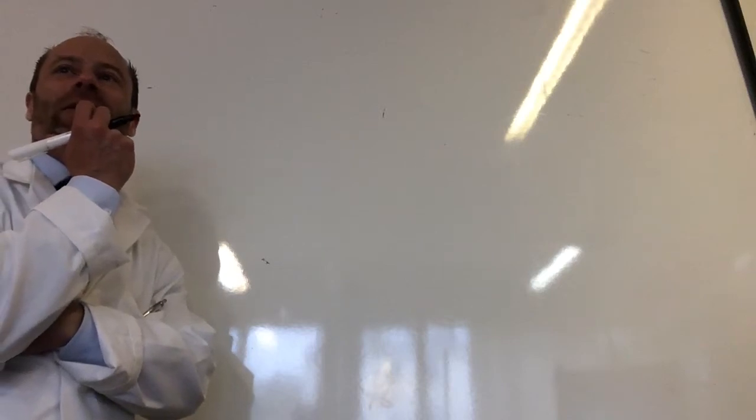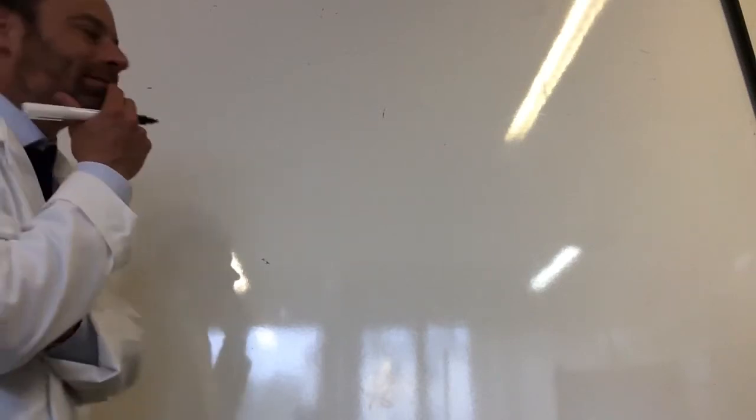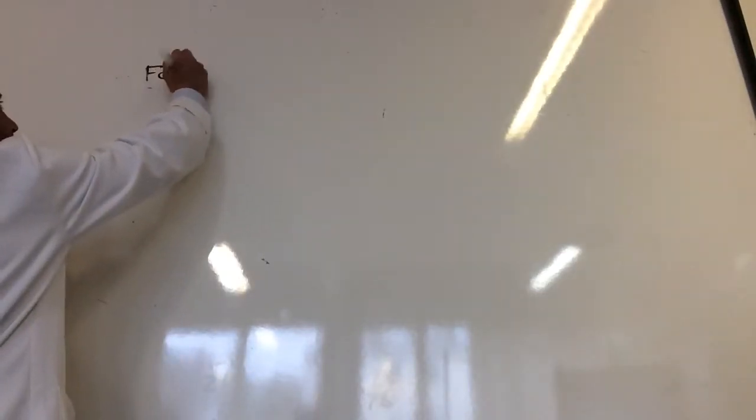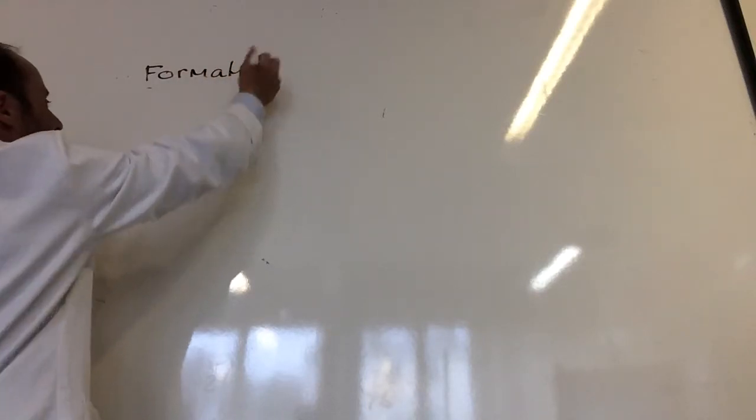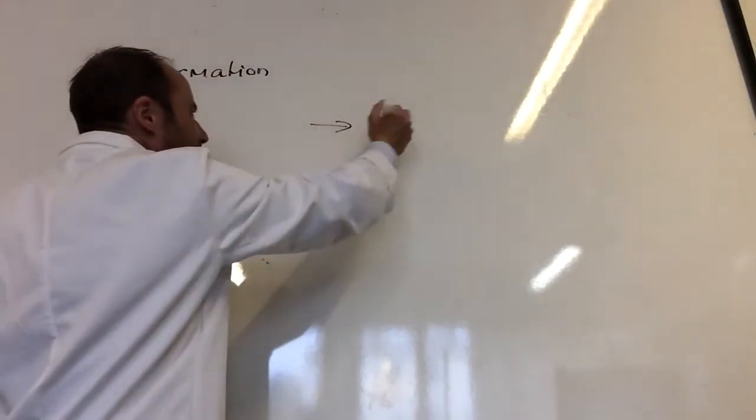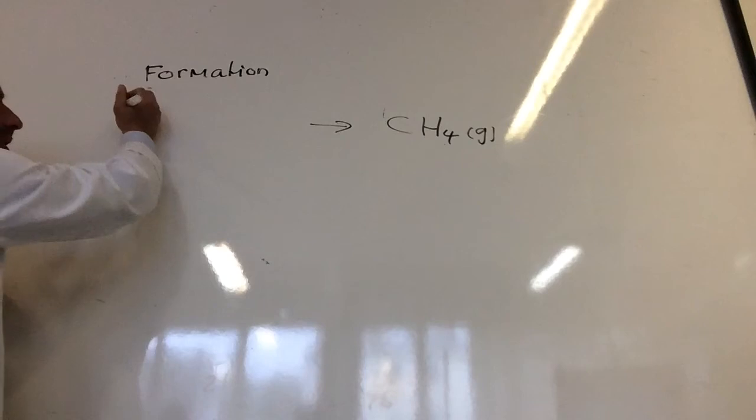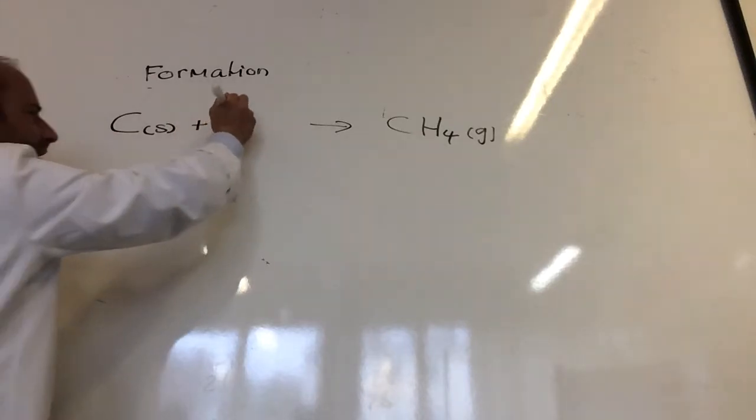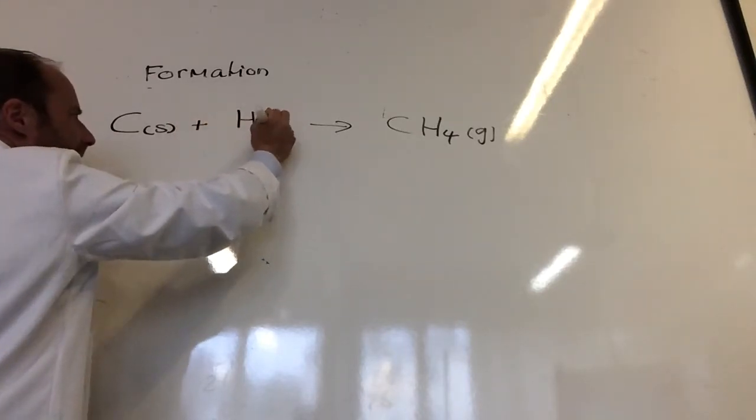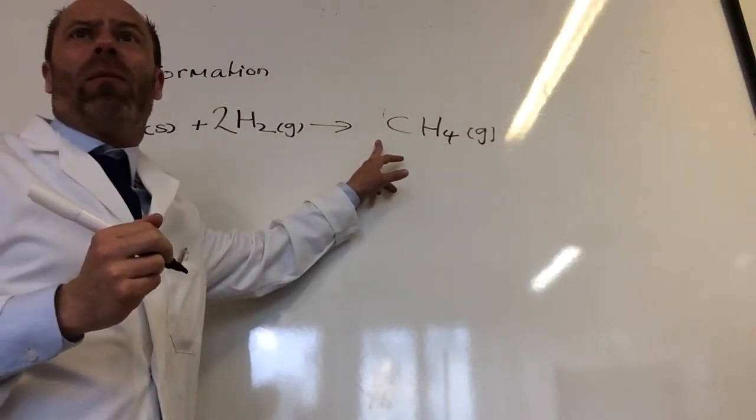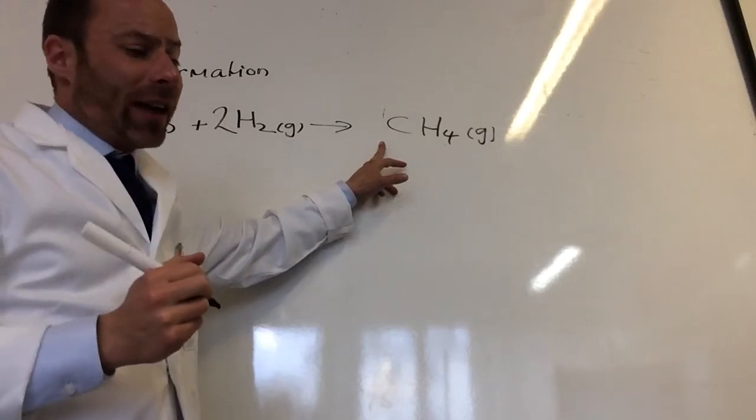So the standard enthalpy of formation, what's that? It's the enthalpy change when one mole of a substance is formed from its given constituents. So for formation, if I was having to make methane, CH4, which in its standard state is a gas, what would I have to start off with? You start off with carbon as a solid and H2 gas. How many? I need two of those. And I can't change that number because it's got to be one mole of substance formed.